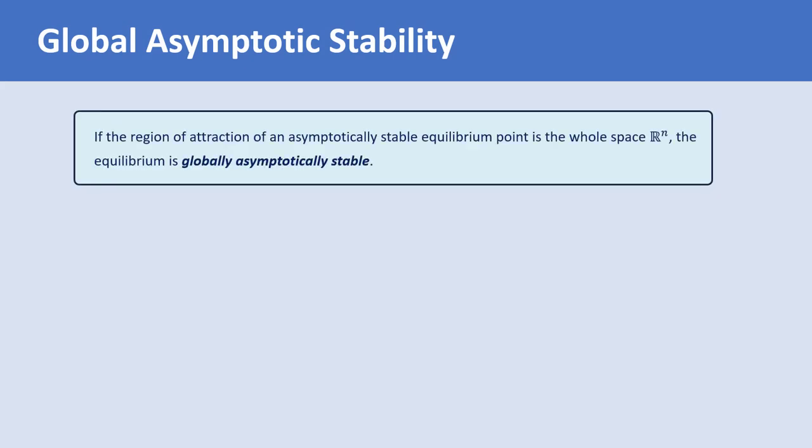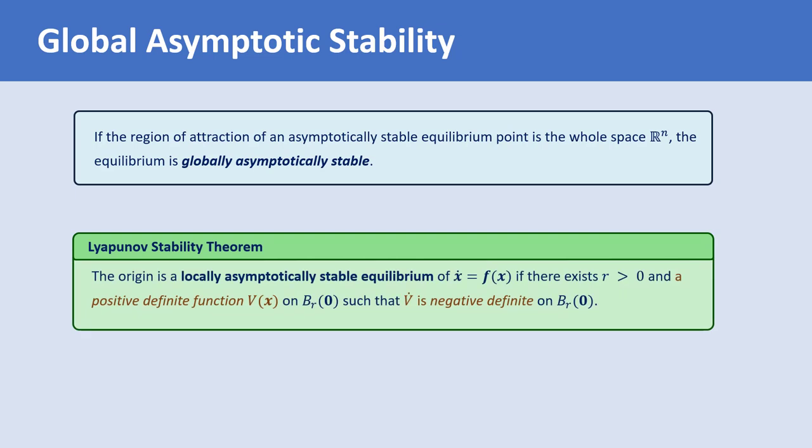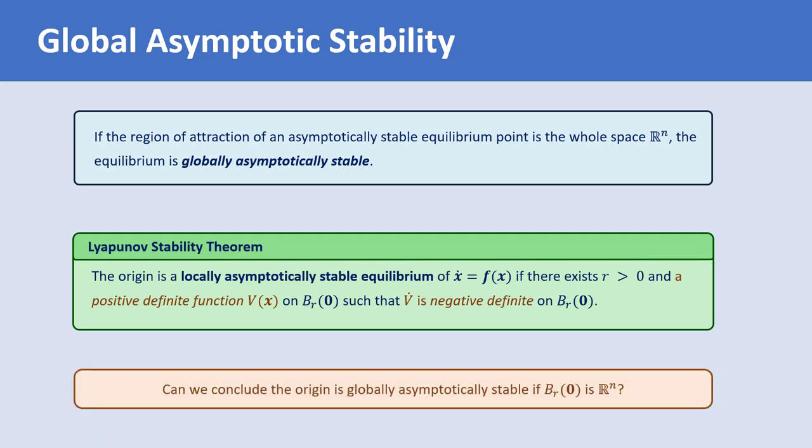We have learned that if the region of attraction of an asymptotically stable equilibrium point is the whole space, then the equilibrium is globally asymptotically stable. Recall the Lyapunov stability theorem, which is used to show local asymptotic stability of an equilibrium point. The theorem says that if there exists a ball around the equilibrium and a positive definite function V on the ball such that V_dot is negative definite, then the equilibrium is locally asymptotically stable. A question that arises is: if the ball in this theorem is the whole space, can we conclude global asymptotic stability? We will show by an example that we need another condition, called radial unboundedness of the function V.